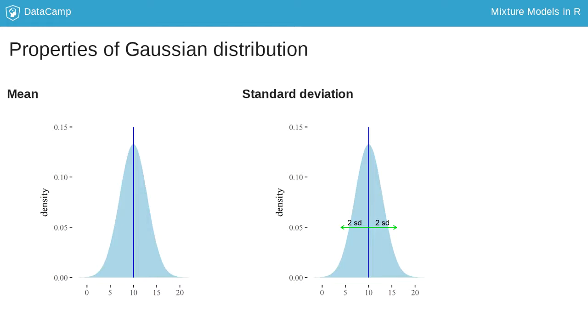A low standard deviation indicates that the values tend to be close to the mean, while a high standard deviation indicates that the values are spread out. The range formed by four standard deviations centered on the mean covers approximately 99% of the probable values.